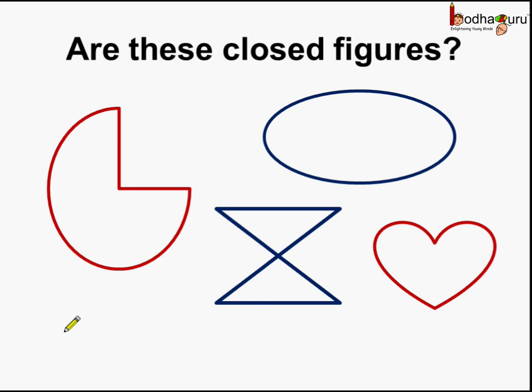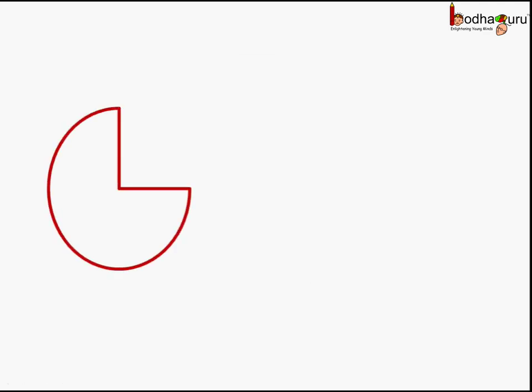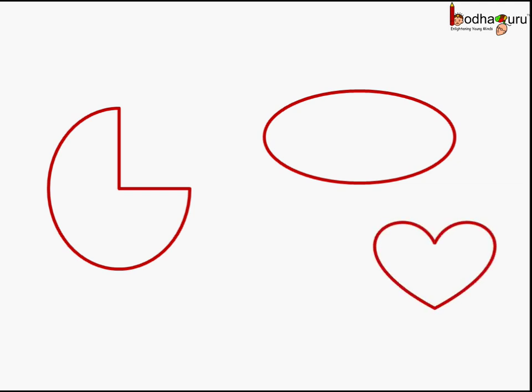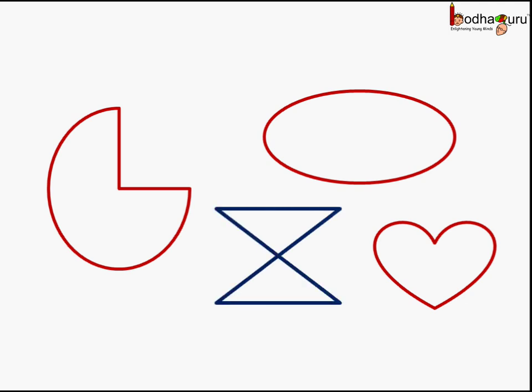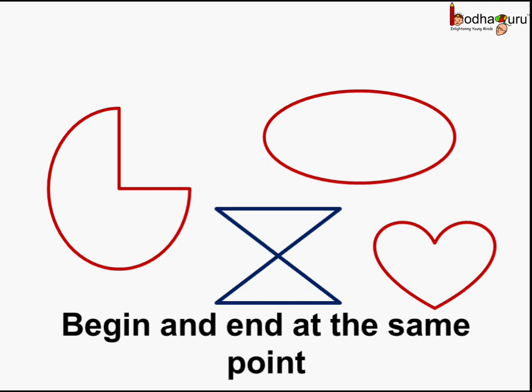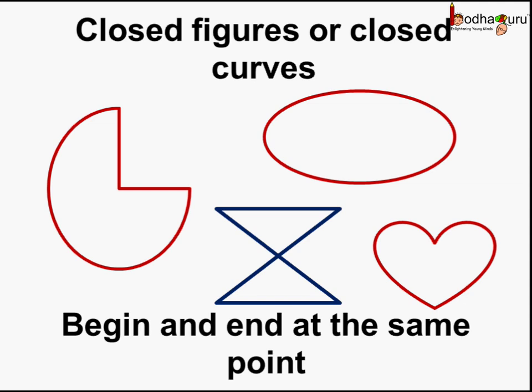Now, are these closed figures? How can we say that? This figure begins and ends at the same point. This figure also begins and ends at the same point, and same with this figure. So, all these figures begin and end at the same point. Hence, all of these are closed curves or closed figures.